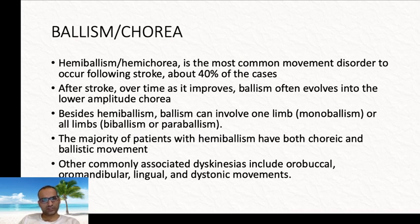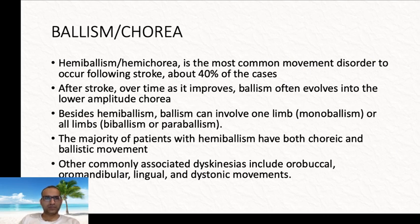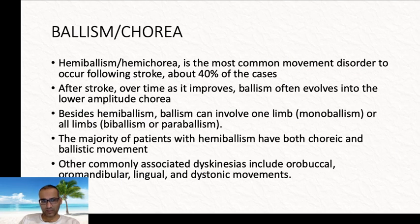The article then discusses individual movement disorder conditions in stroke. Starting with the most common — hemiballism and hemicorea — which accounts for about 40% of cases. They are grouped together because of significant overlap between the two. Hemiballism usually improves over time and evolves into chorea. Apart from hemiballism, you can have involvement of one limb or multiple limbs, and most patients will have hemiballism as well as chorea along with other abnormal movements.